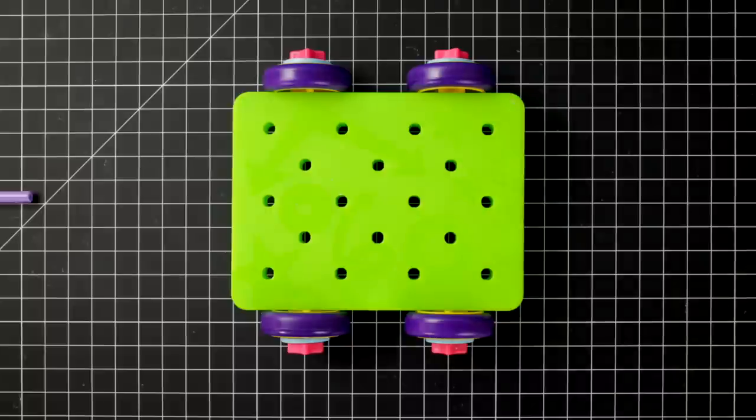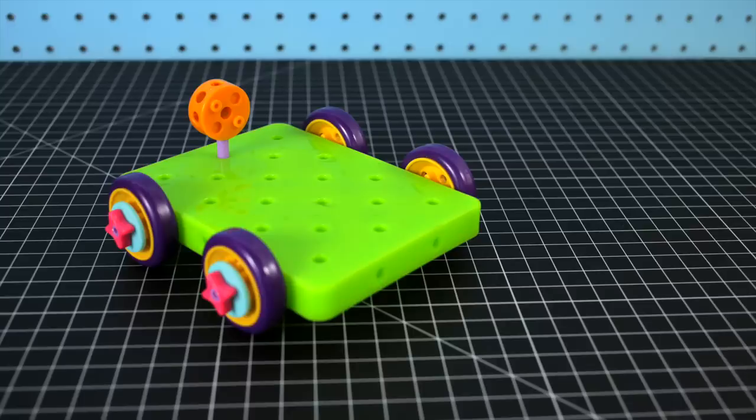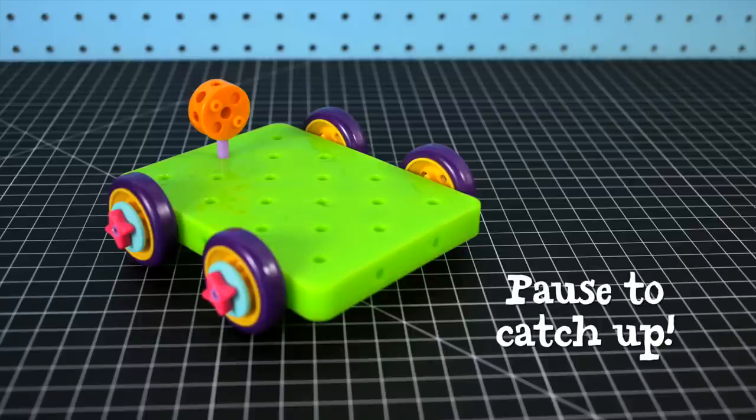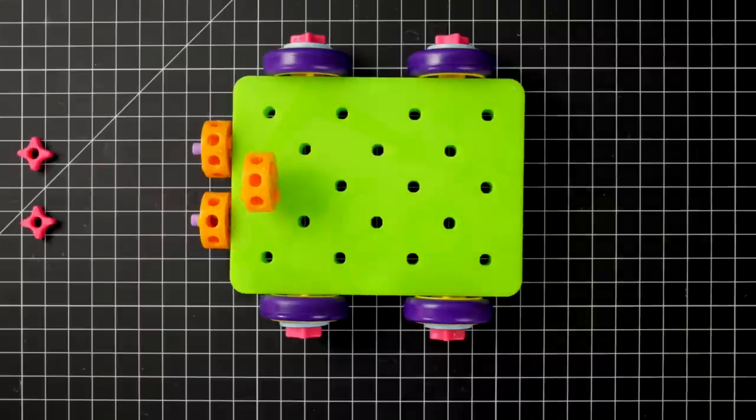Step 2. Add a mini axle and wheel hub to the pegboard. This will be part of our launcher later on. Stick mini axles into the back of the pegboard. Now slide on wheel hubs and cap them off with spacers.